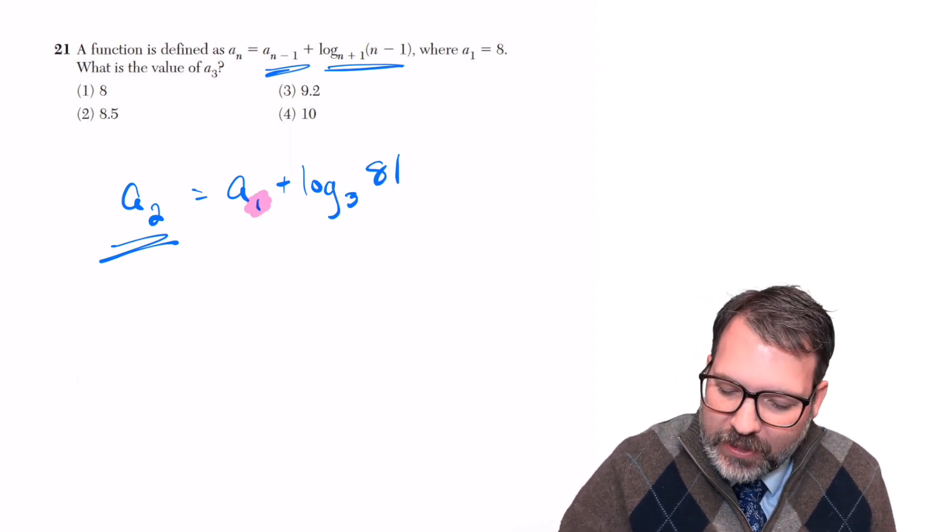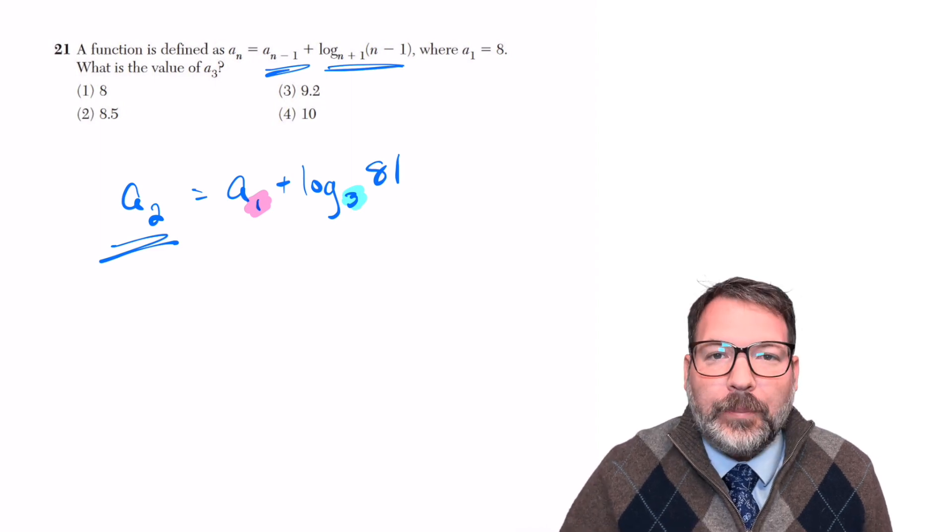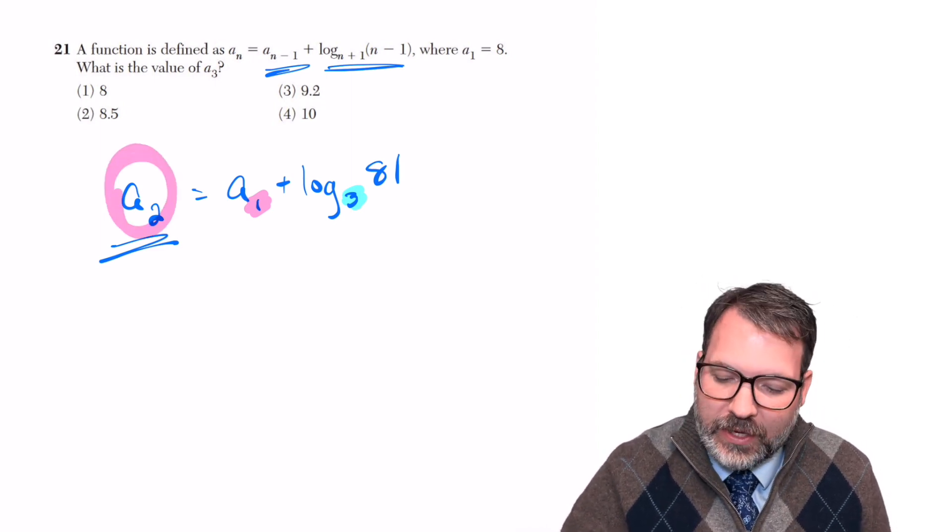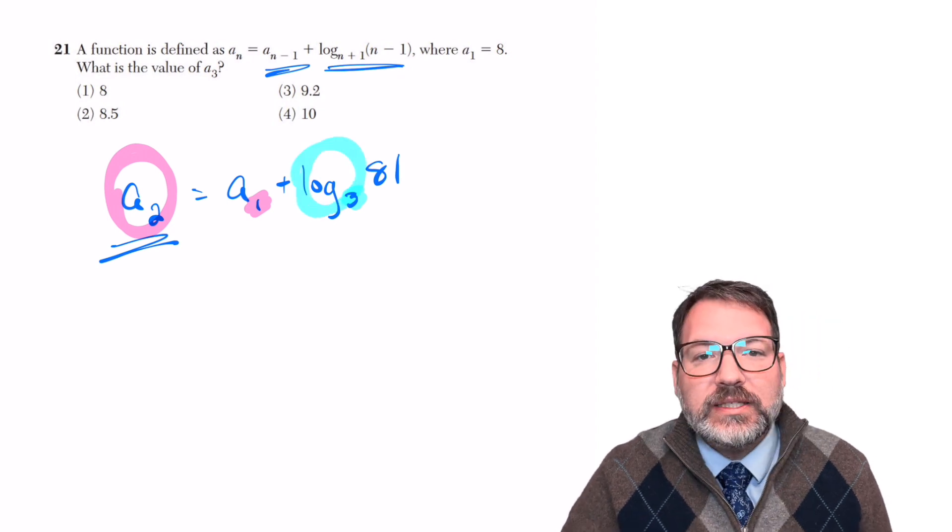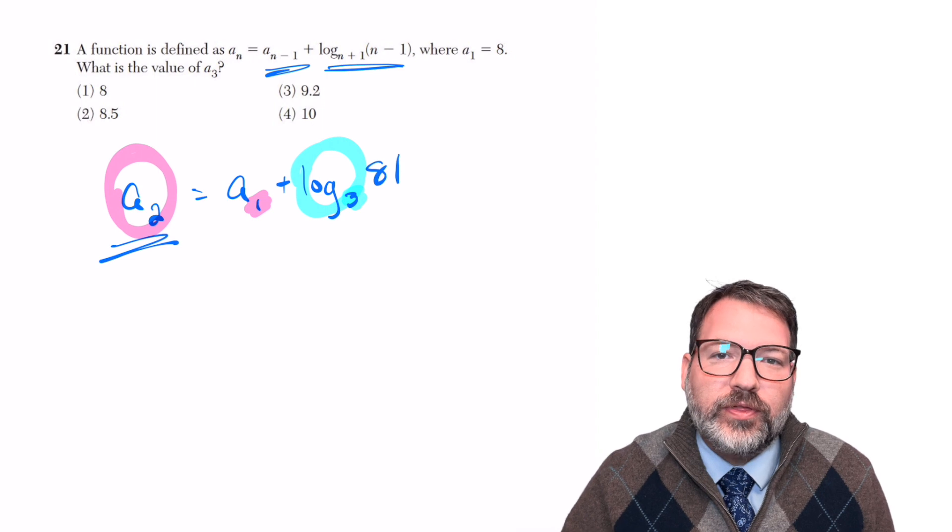So the problem here is we're combining two totally different kinds of base notations. One that doesn't have operational value, that is the functional notation a sub n, and then one that very much does have operational value. Log base n, we do something numerically with that base.